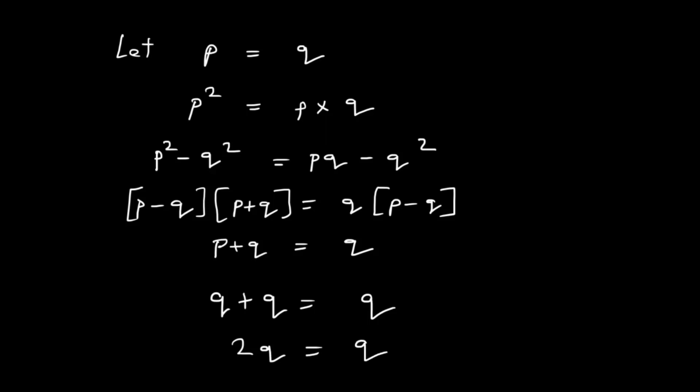Now, let's cut out Q both from the left hand side and the right hand side and we get 2 is equal to 1. Now, Anna, can you tell me what's wrong with this proof?